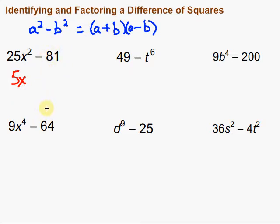Then here, 81. Is 81 a perfect square? Yep, 9 times 9 gets us 81. So that means this is a difference of squares. So it's going to factor into 5x plus 9 times 5x minus 9.